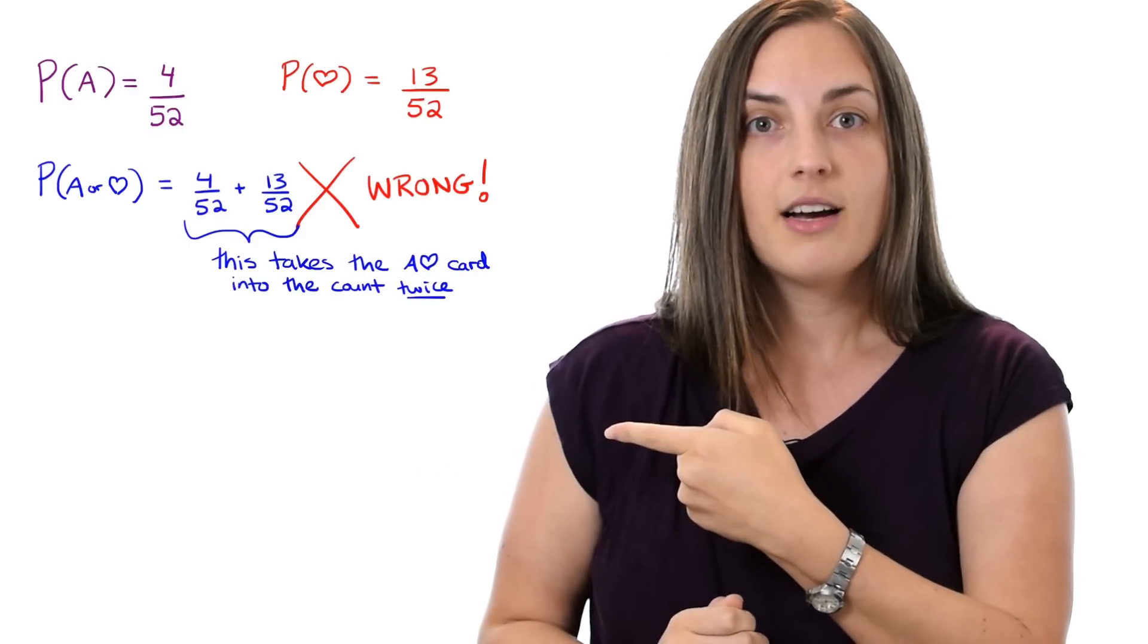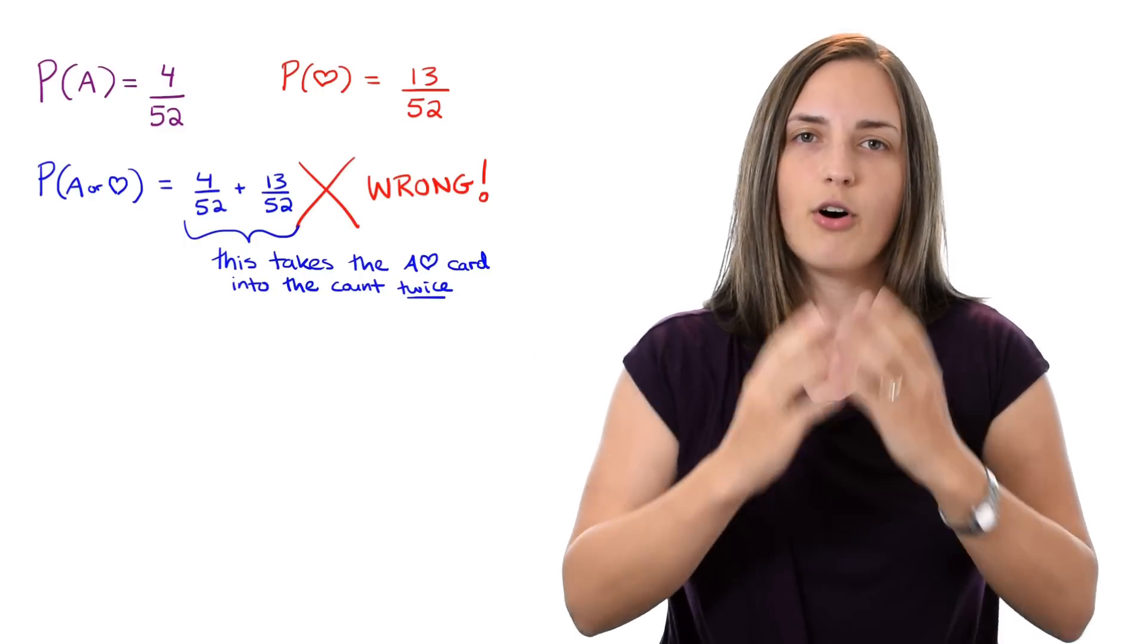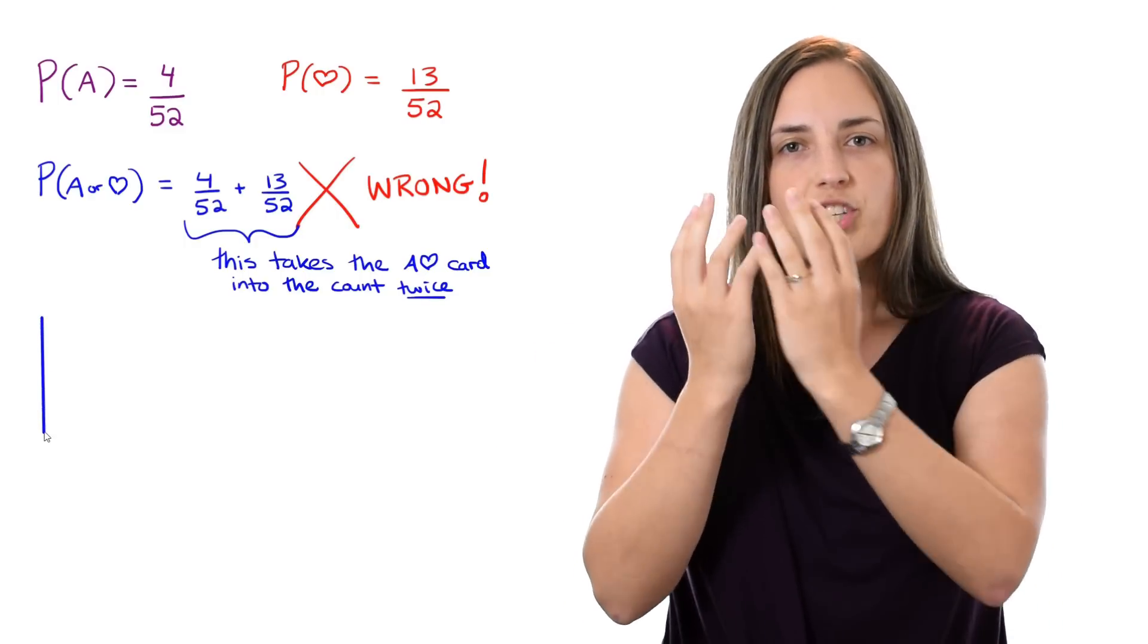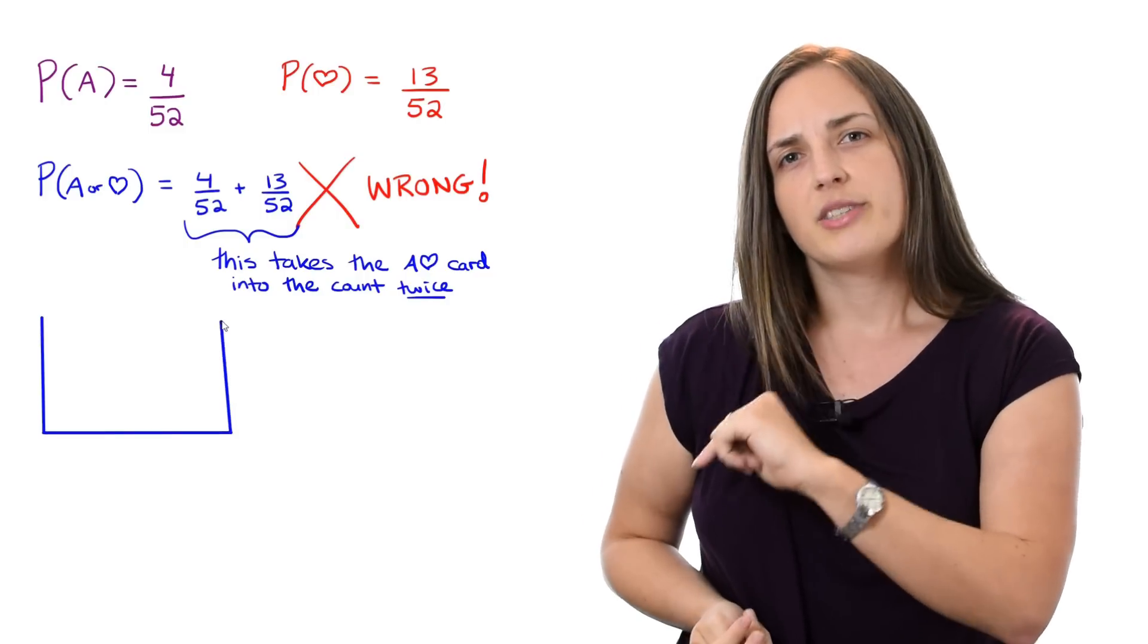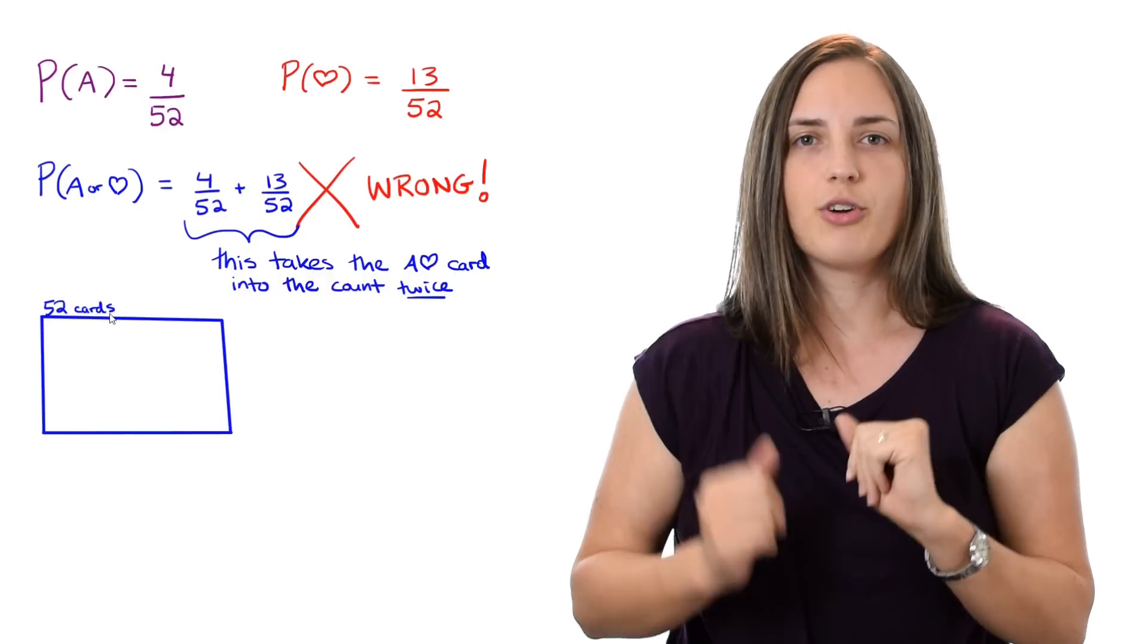The reason why it's wrong is because the Ace of Hearts got counted twice, once as being an Ace and once at being a Heart. So let's see why this works. Let's think about the set of all the outcomes which give us an Ace and we're going to actually draw a Venn diagram where in the box we have all 52 cards.